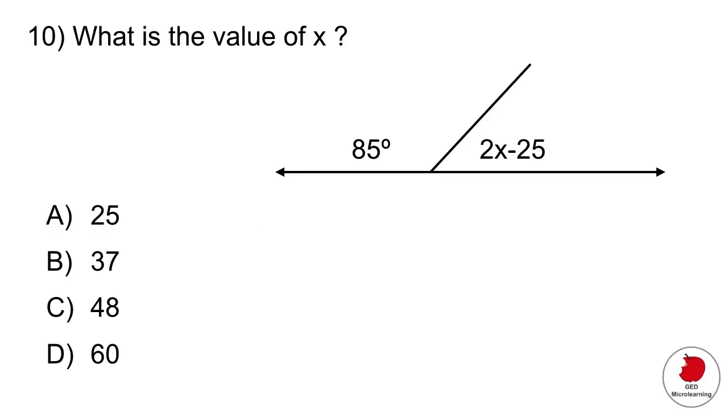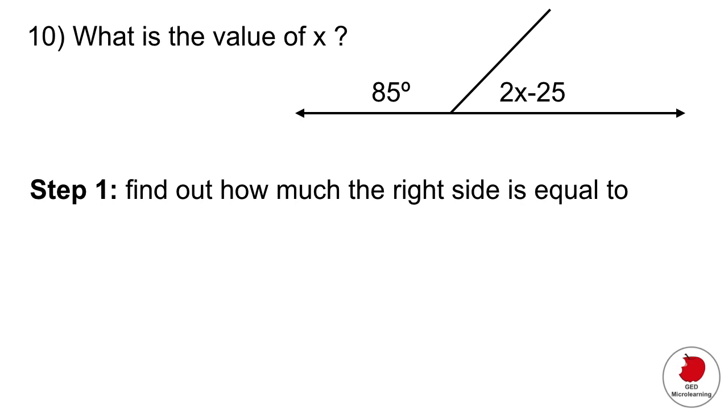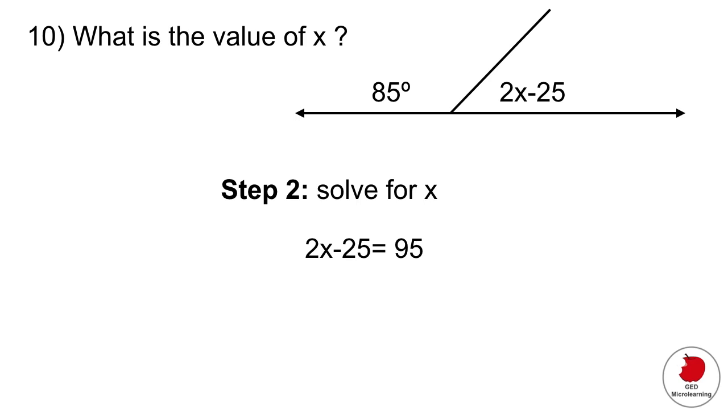The last question is also a geometry question which is asking you to look at the value of x. And this question has two parts. So the first part is that you have to find out how much the right side is equal to. So if you remember for a straight line the straight line is 180 degrees. So we know that the left side of that line is 85 so we have to find out what the right side is. So to do that we would subtract 180 minus 85 that gives us 95. And the reason that we're doing that is because now we need to set up our equation right. So we would say 2x minus 25 is equal to 95 and that is step two. So we want to go ahead and solve for x. The way that we do this is on the left side we will add 25. Remember that what you do on the left you have to do to the right. So we end up with 2x is equal to 120. And now to isolate x you want to divide both sides by 2. That gives you that x is equal to 60 which is option D.